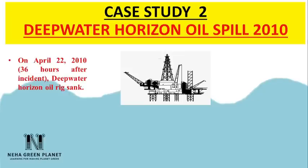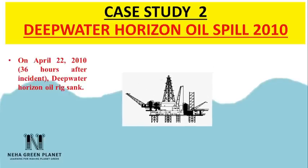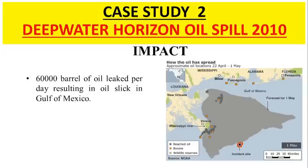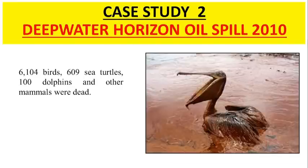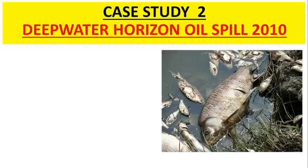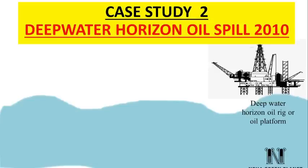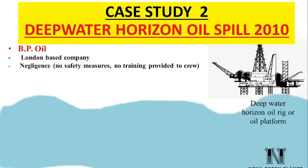On April 22, 2010, the oil rig sank, and the oil stored on it started leaking — an estimated 6,000 barrels per day for three continuous months, causing a massive oil slick in Gulf of Mexico waters. The incident severely impacted aquatic life: 6,104 birds, 609 sea turtles, 100 dolphins, and many mammals were found dead. Water in the Gulf of Mexico was found to contain very high amounts of polycyclic aromatic hydrocarbons (PAH), a carcinogenic chemical that interferes with biological processes and caused negative impacts on fish.